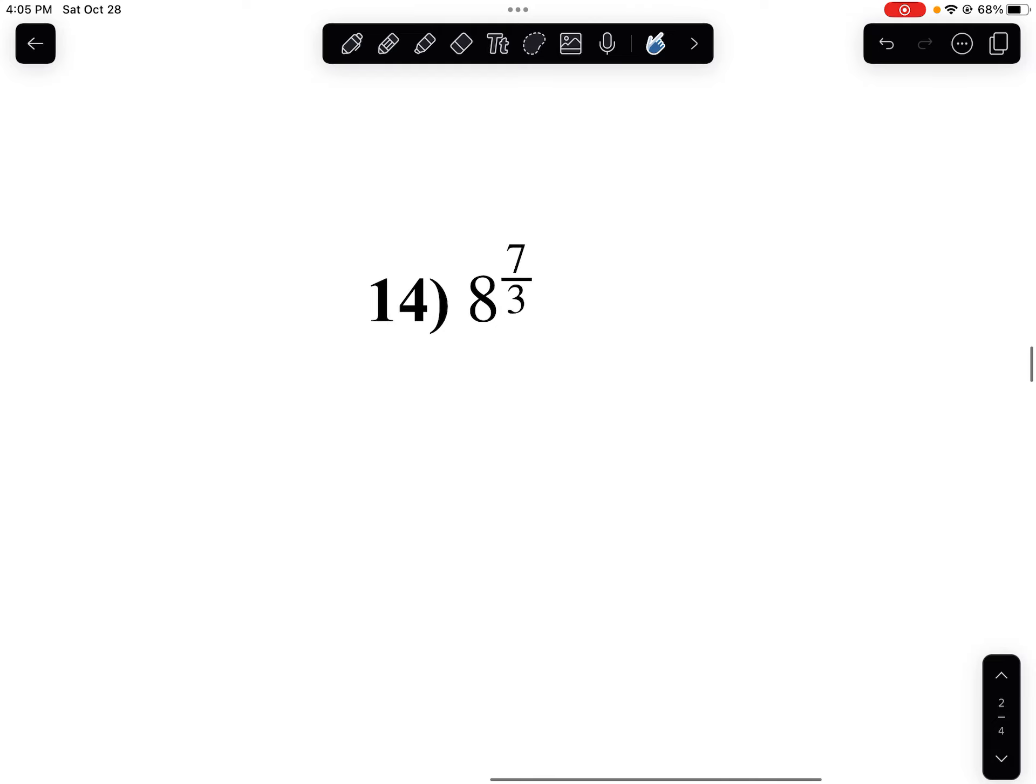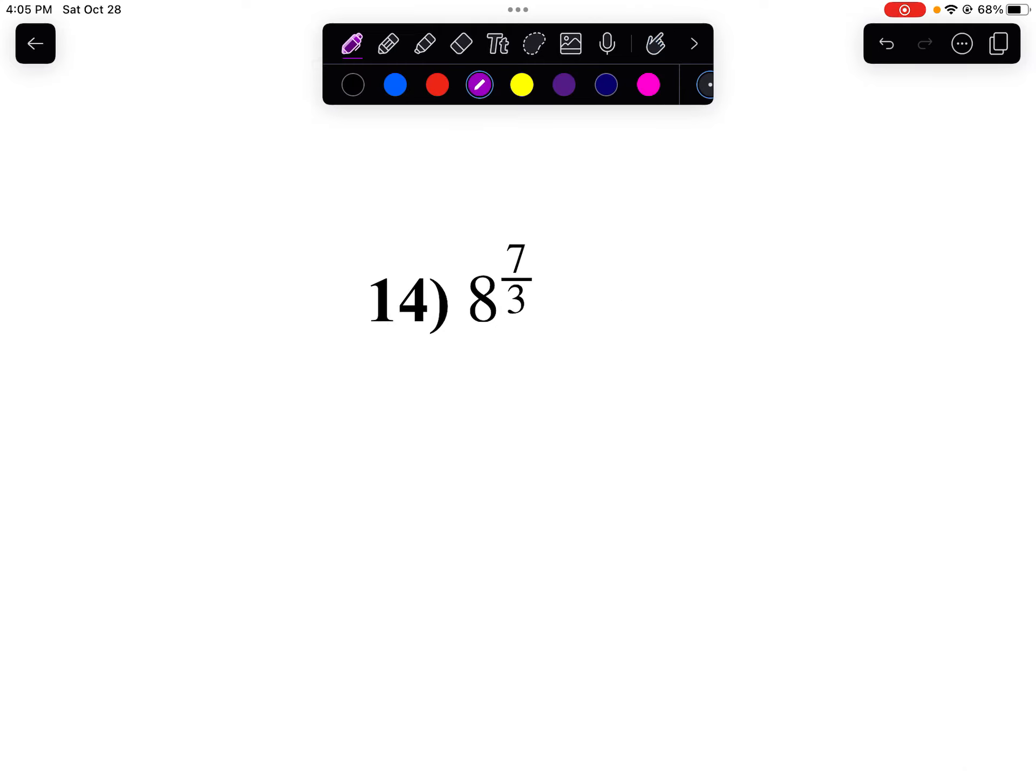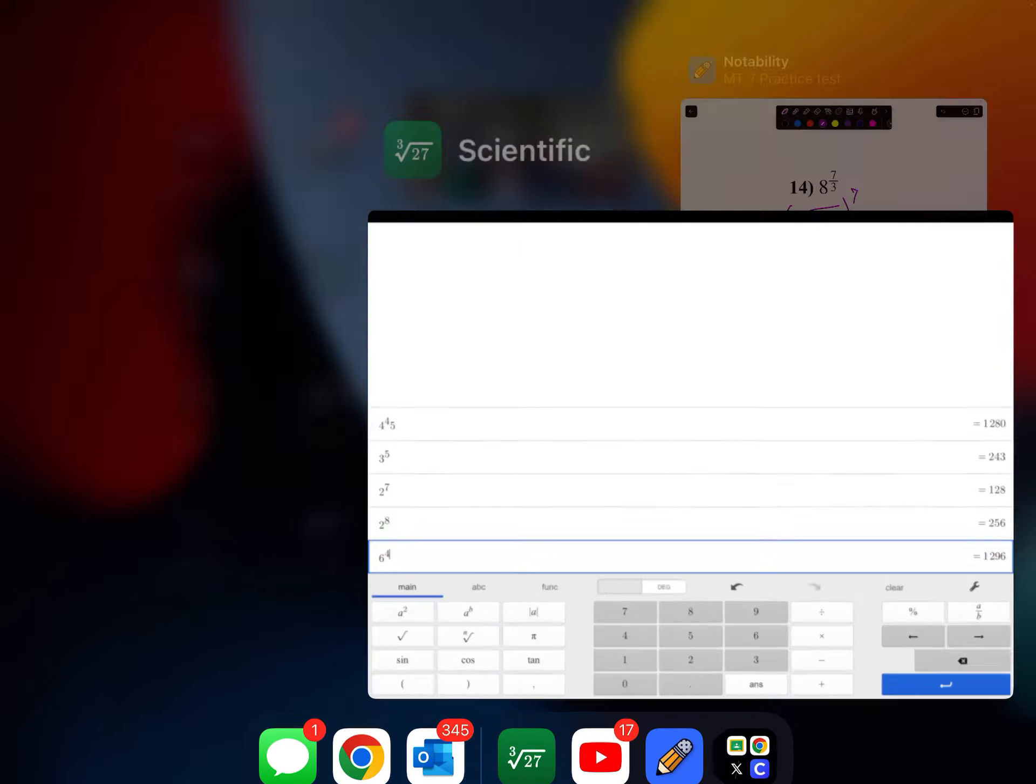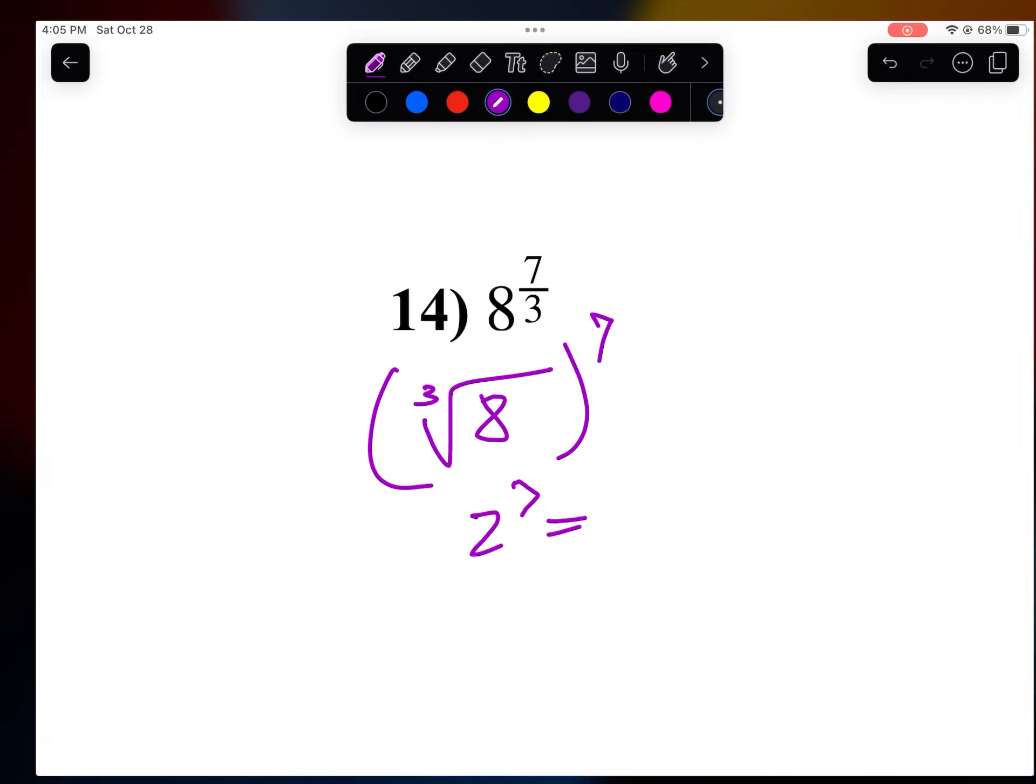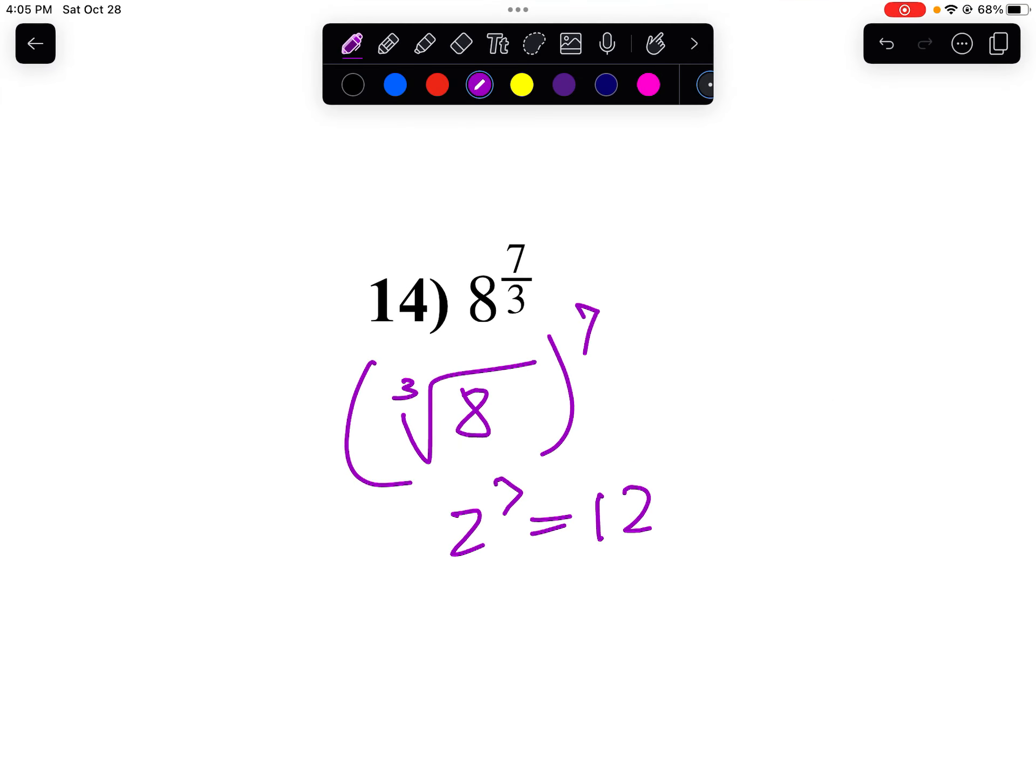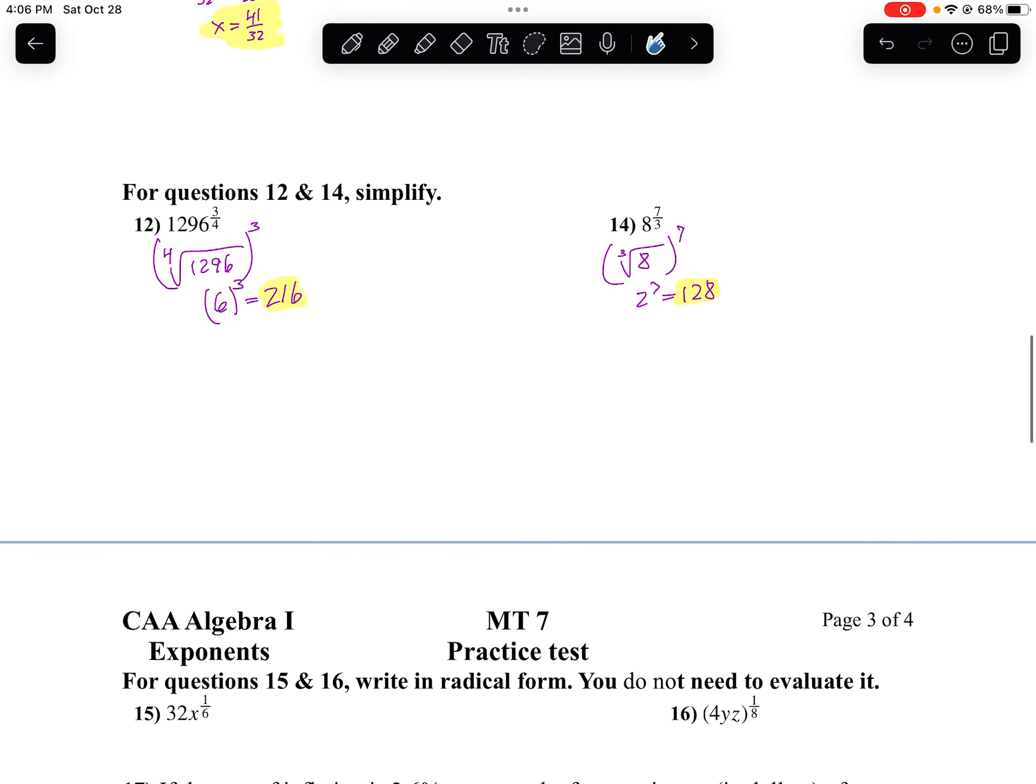Let's do the same thing on number 14. Notice my index is 3. So I'm going to take the cube root of 8 and I'll raise that to the 7th power. Well, the cube root of 8 is 2. I think we just did 2 to the 7th. I think that was 256, but I have a short memory. Oh, there it is. 2 to the 7th is 128. And there's your answer for that one.